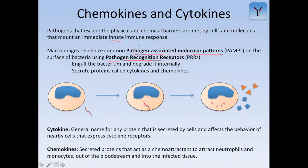When macrophages recognize a PAMP, they engulf the bacterium and degrade it internally — that's phagocytosis. The bacterium has molecular markers on its surface that are the PAMPs, and the macrophage can detect these to identify the pathogen as foreign. After engulfing and degrading it, the macrophage secretes proteins called cytokines and chemokines, sending signals out to the rest of the body.